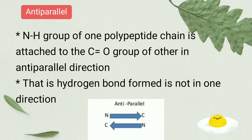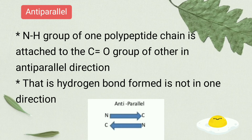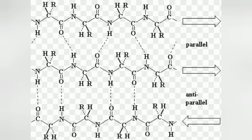In anti-parallel structure, the NH group of amino acids in the first polypeptide chain is attached to the CO group of amino acids in the second polypeptide chain, but during the next position, the CO group of the first polypeptide chain attaches to the NH group of the second polypeptide chain — so it occurs alternately. If you observe the figure you will clearly understand. Also keep in mind that hydrogen bonds can be formed between amino acids of the same polypeptide chain or different polypeptide chains — that is a speciality of secondary structure.